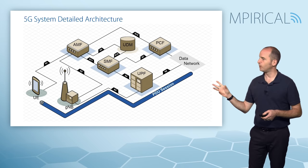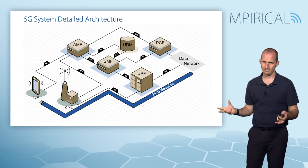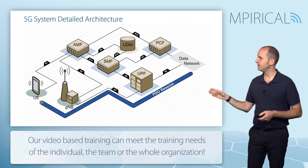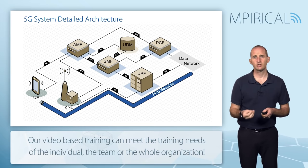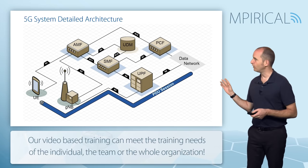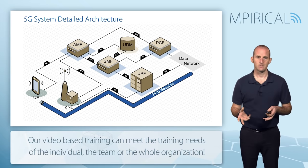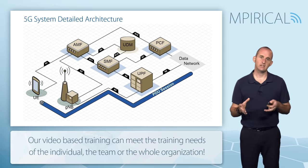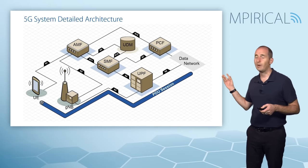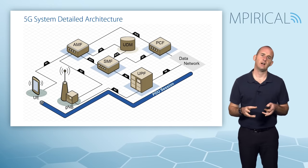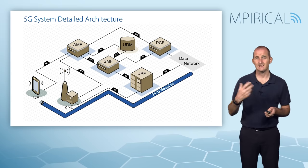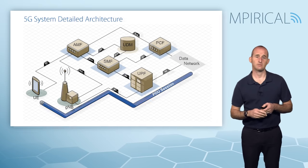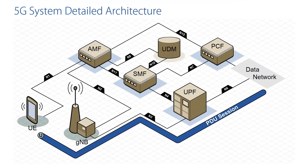You can see the PDU session runs from the mobile device through the gNB to the UPF — the User Plane Function — and then on to the data network. Traditionally in LTE it would be called the packet data network; in 5G it's the data network, and this is going to be the internet, perhaps the IMS, or a corporate LAN of some description.